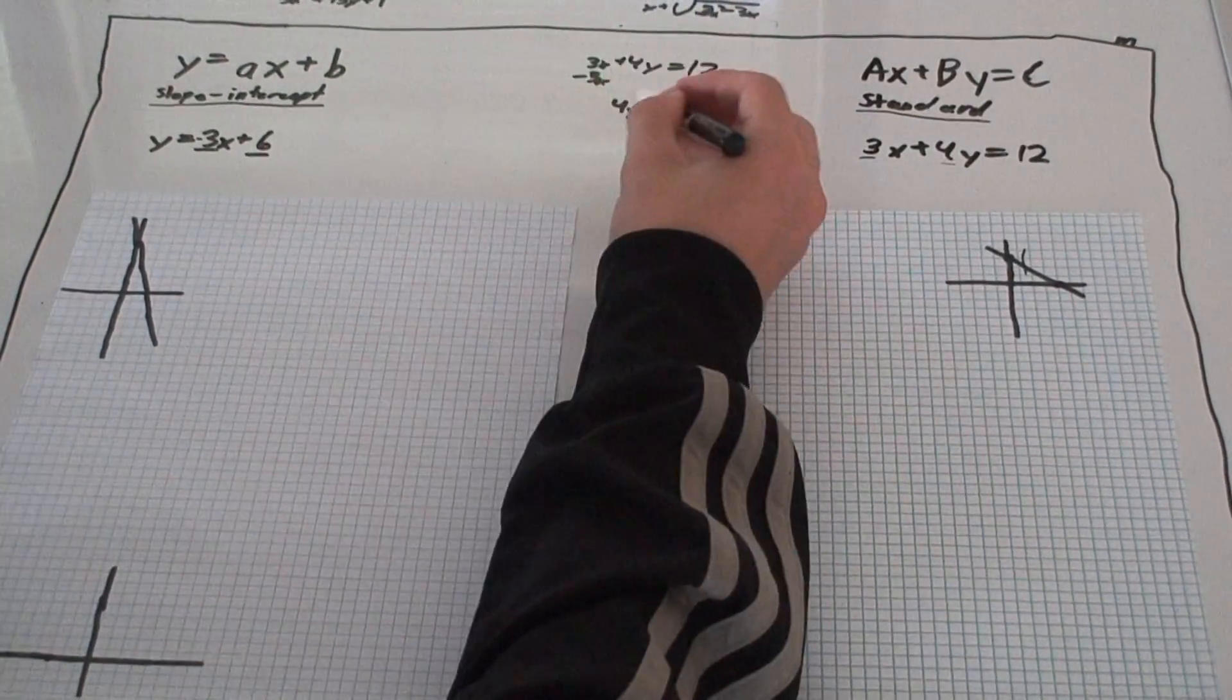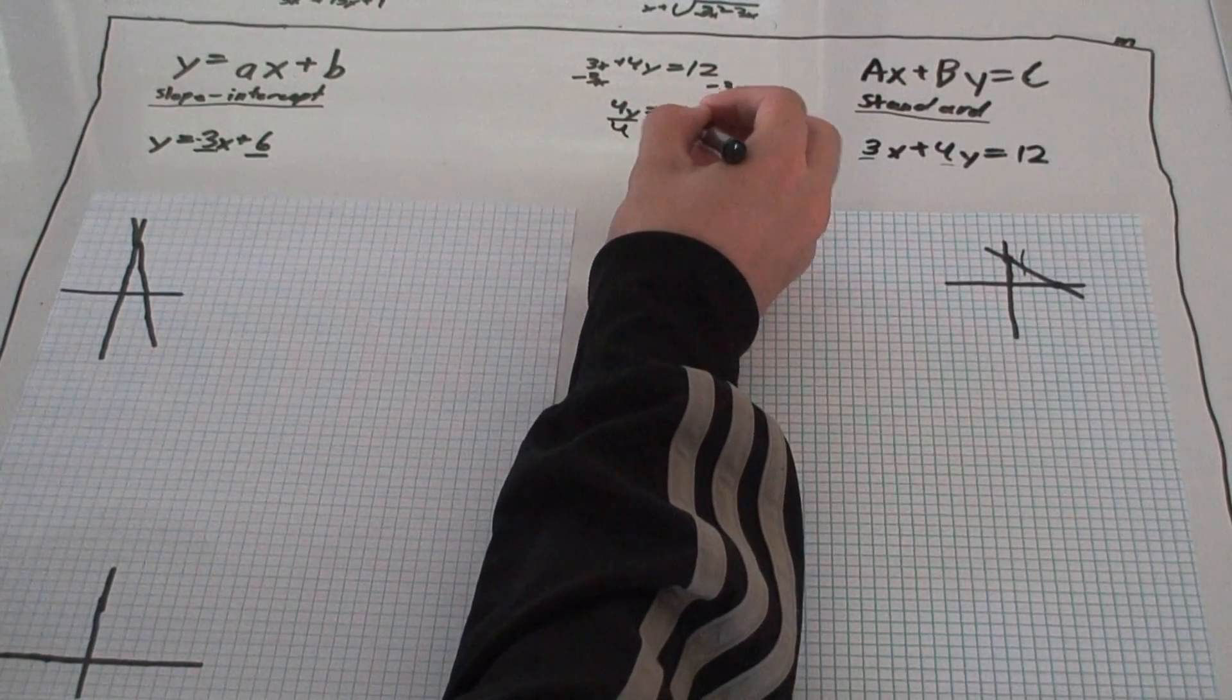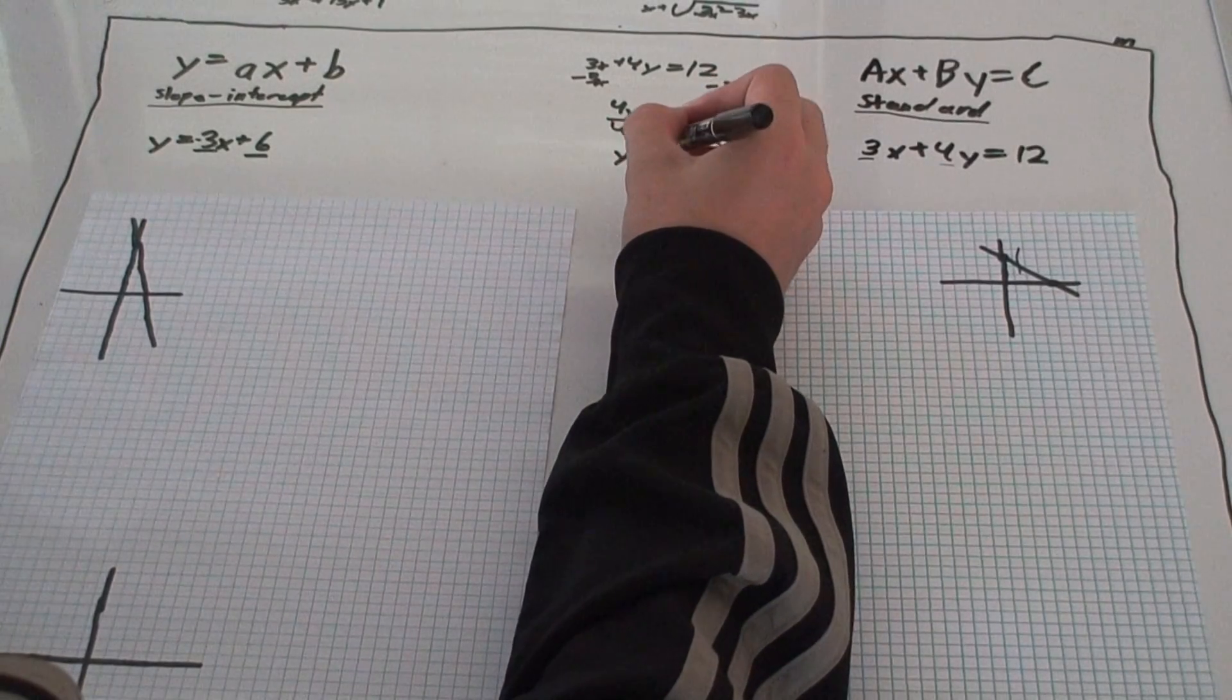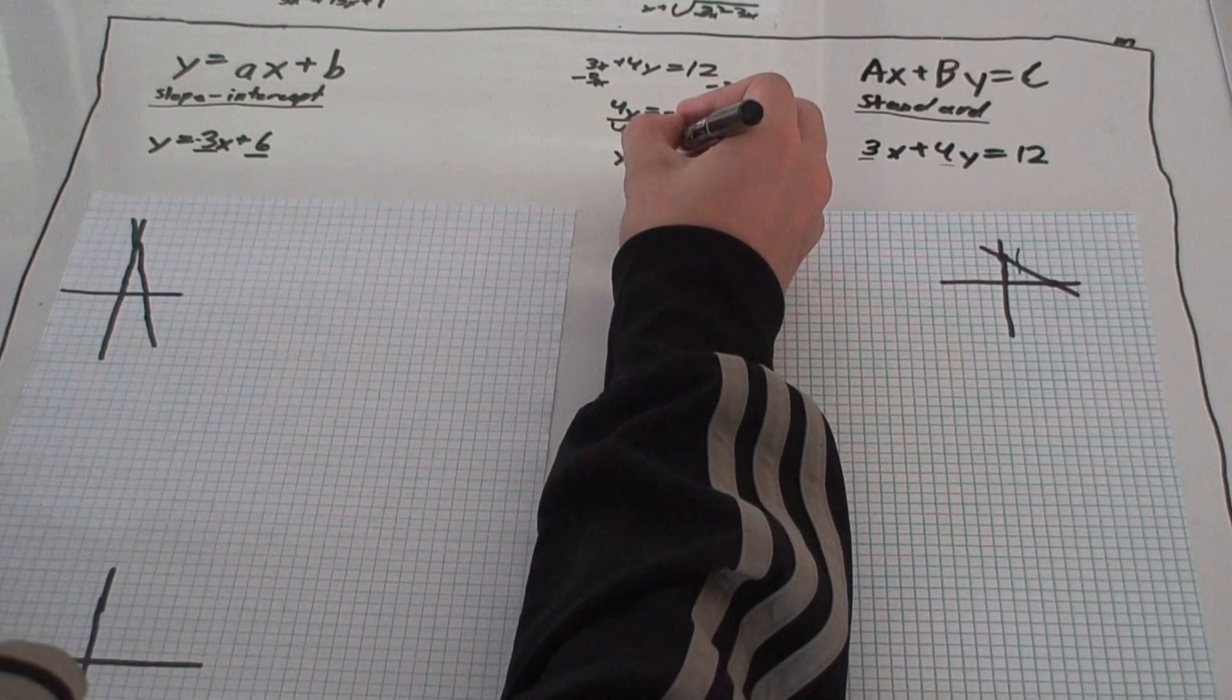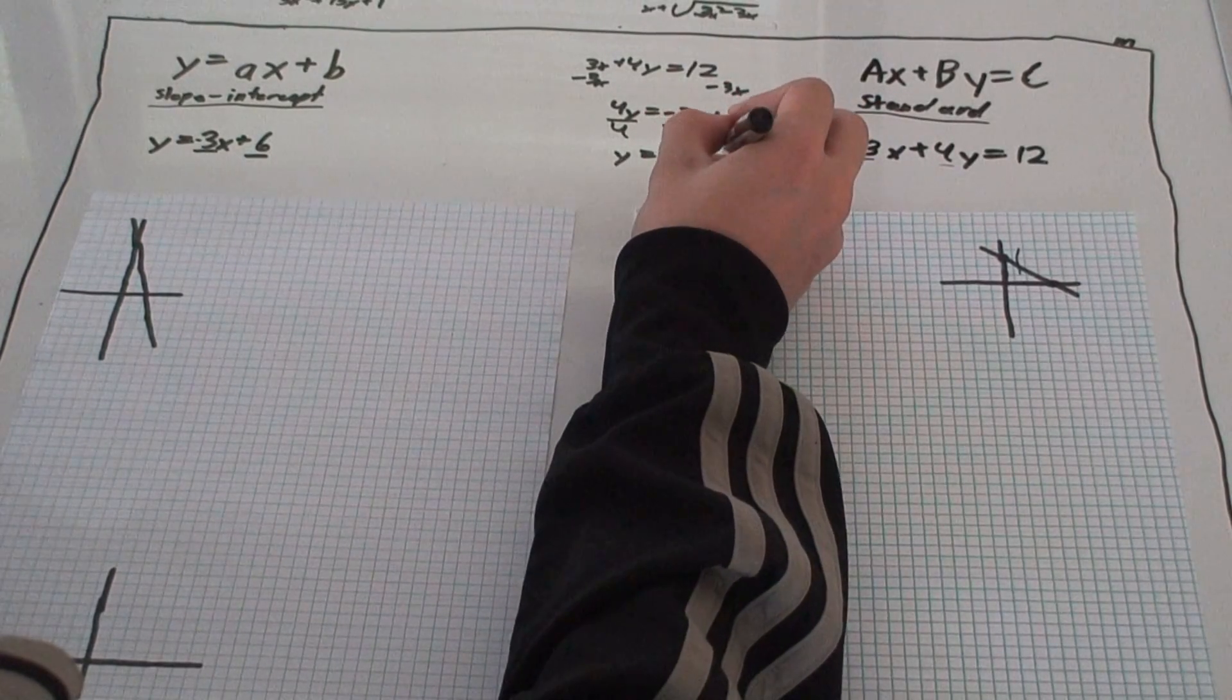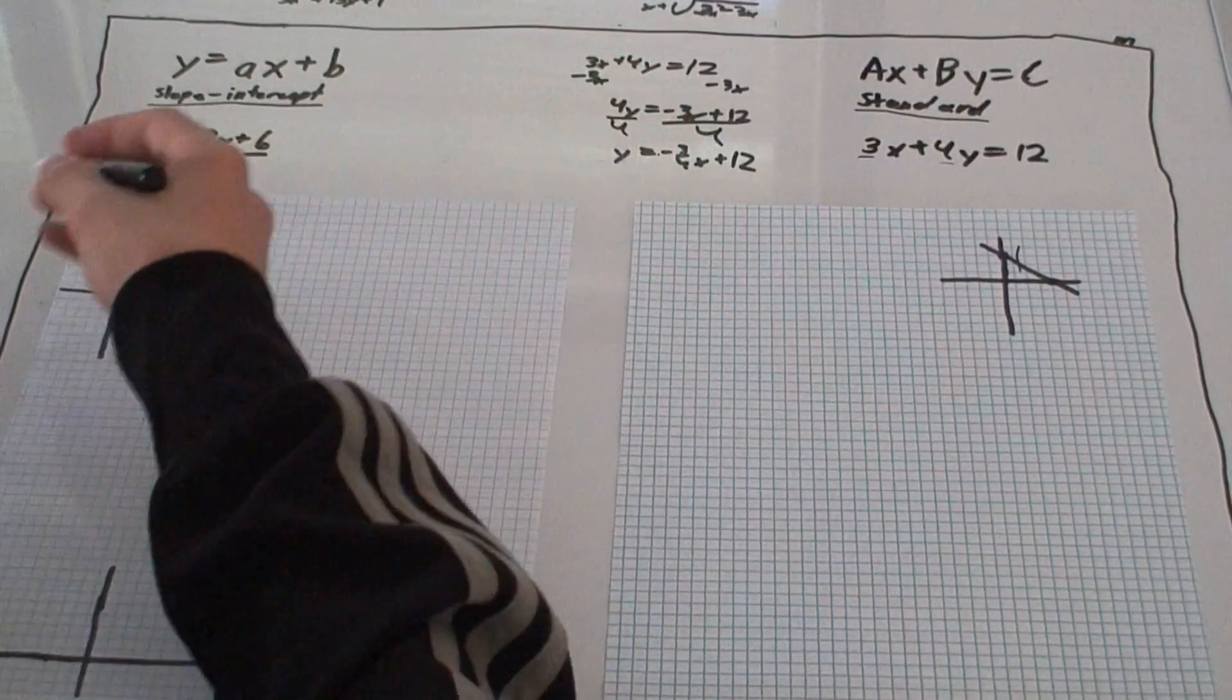4y is negative 3x plus 12. Then, to further isolate our variable, we would divide it by 4. Which would leave us with y is negative 3 fourths x plus 12.